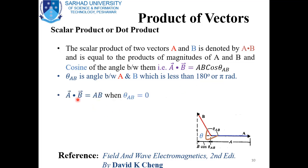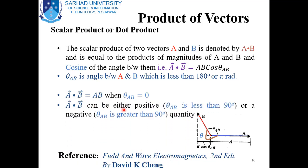The dot product of two vectors simply gives the product of their magnitudes when the vectors lie in the same direction or are parallel, since the angle between them is zero and cos(0°) = 1. The dot product can be positive or negative depending on θ: if θ < 90° the dot product is positive; if θ > 90° it is negative; if θ = 90° (π/2 radians) the dot product is zero, and the vectors are called perpendicular or orthogonal vectors.